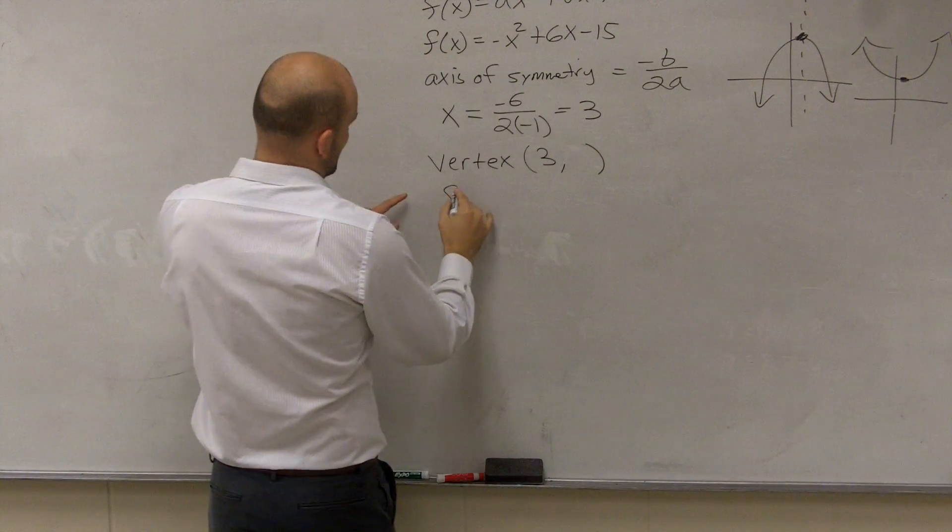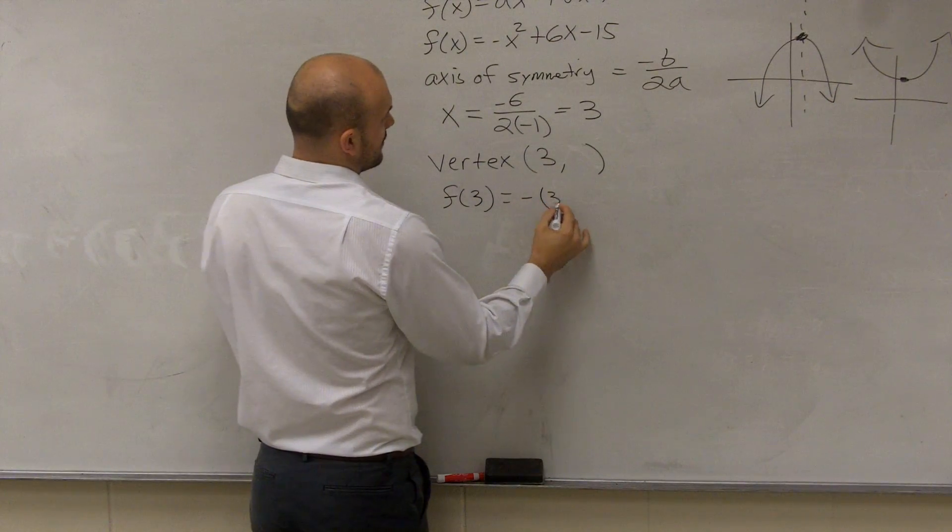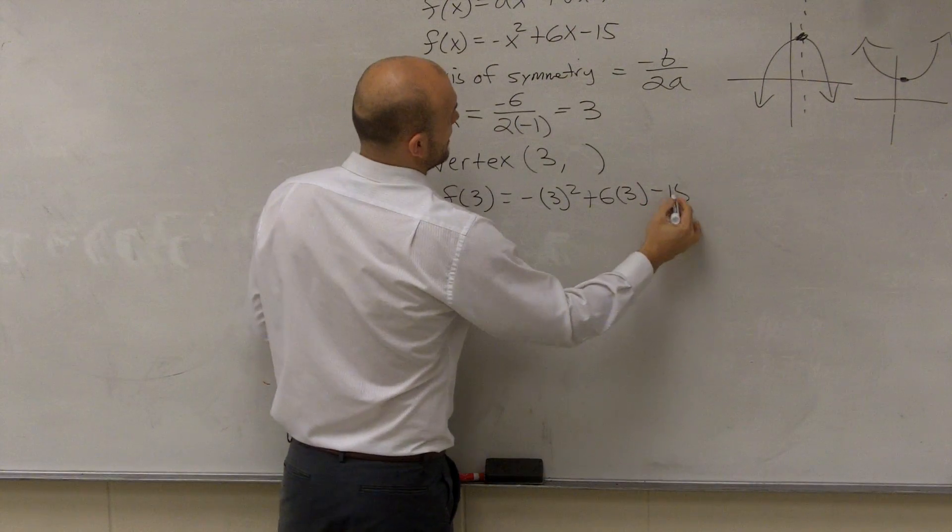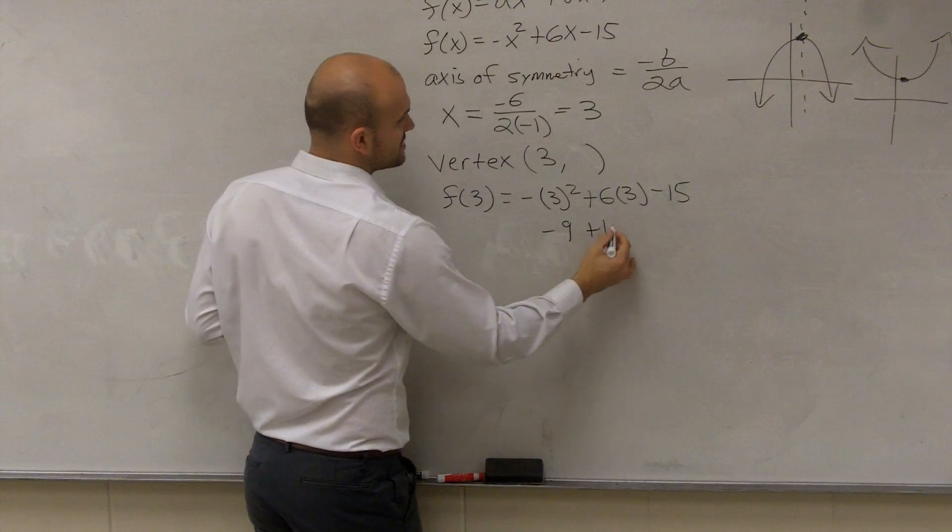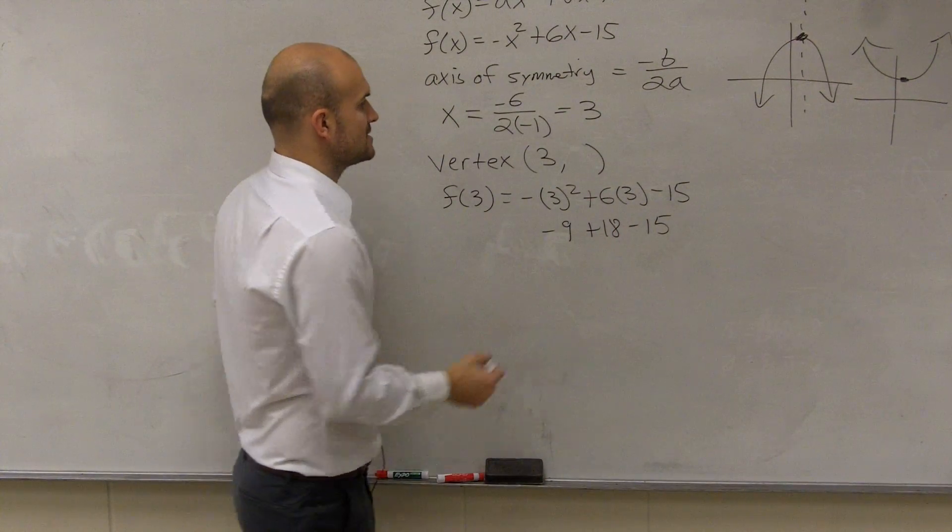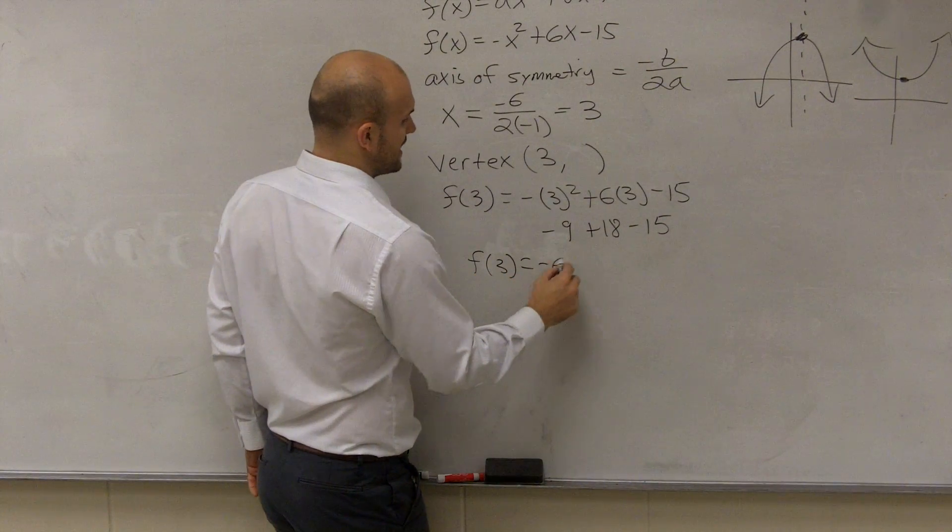So, what I do, then, is I take f of 3, and I get negative 3 squared plus 6 times 3 minus 15. This becomes a negative 9 plus 18 minus 15, which ends up giving me f of 3 equals negative 6.